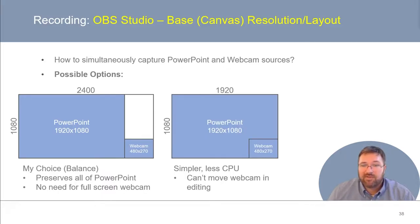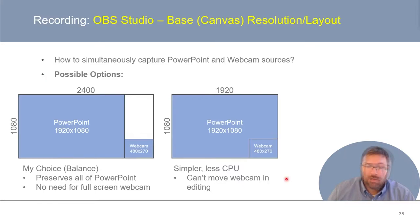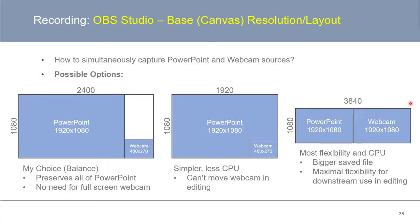You could also set up your OBS Studio base canvas with a simpler 1920 by 1080p format and simply permanently overlay your webcam in some corner of your PowerPoint presentation. This approach is simpler and requires less CPU, but you can't move or manipulate your webcam footage when you get to editing. The beefiest option is a base canvas of 3840 by 1080p, putting your PowerPoint slide at 1920 by 1080 next to a full webcam feed also at 1920 by 1080p. This gives the most flexibility downstream in editing, but takes up the most CPU. Whatever you decide, just make sure your base canvas resolution can handle all the input streams you want to combine.